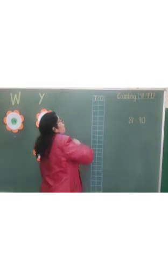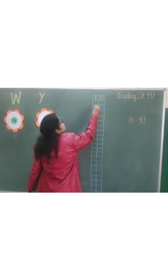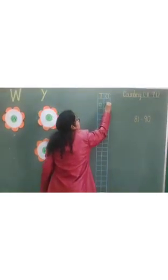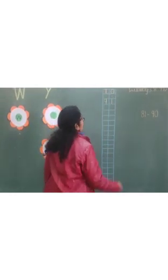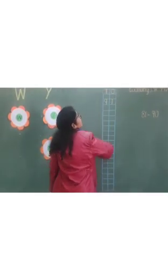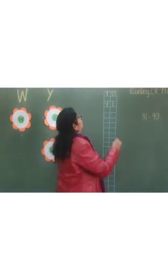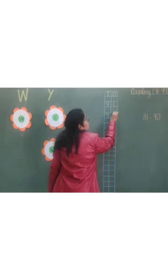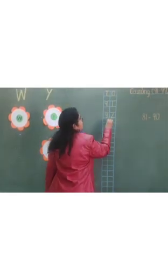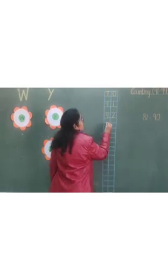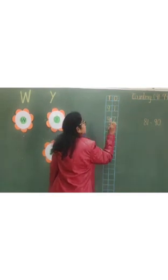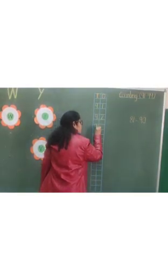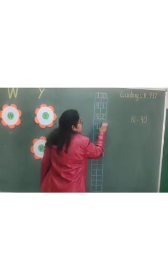How will you write 91? 91 is written as 9 tens and 1 one — 91. Then 92: 9 tens and 2 ones — 92. Then 93: 9 tens and 3 ones — 93.